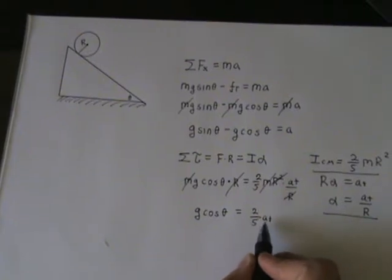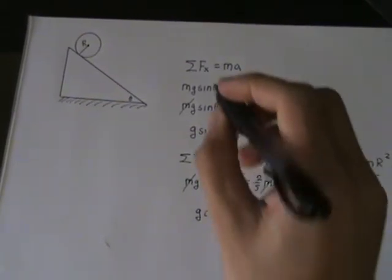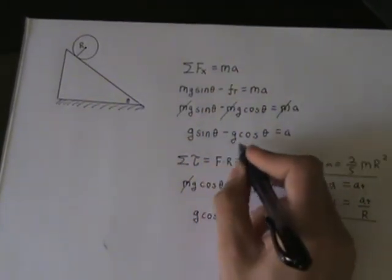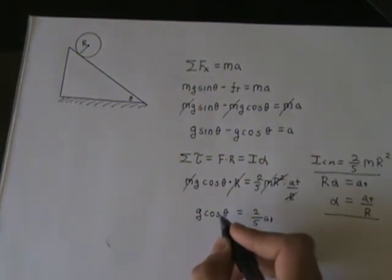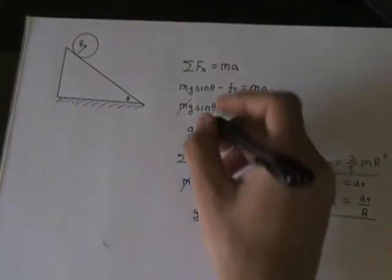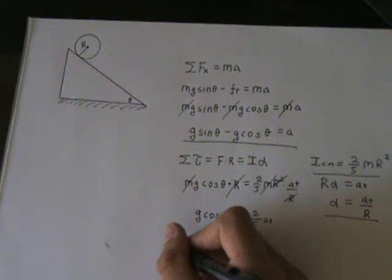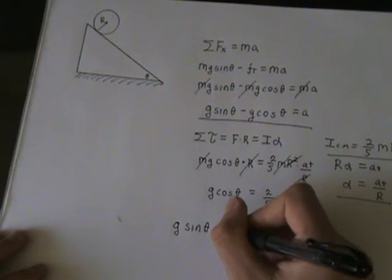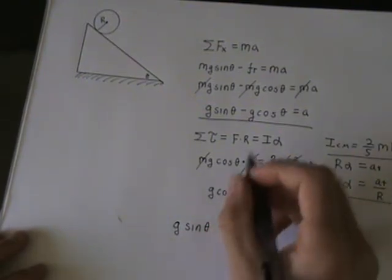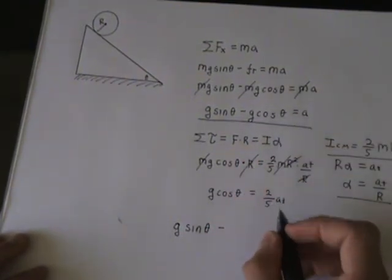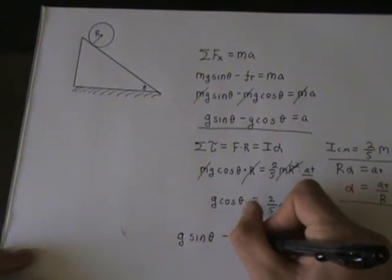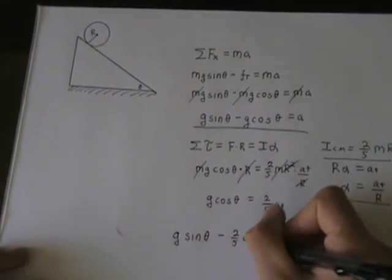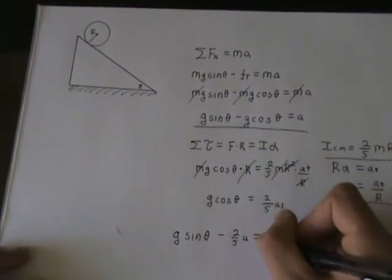Now we can plug this 2 fifths a back to this equation. Basically, we're substituting g cosine theta with this. Back to this again, it will be g sine theta minus, for g cosine theta, we're substituting 2 fifths a. 2 fifths a is equal to a.